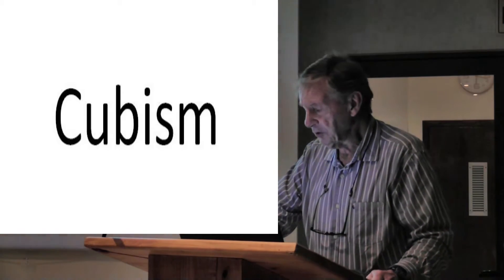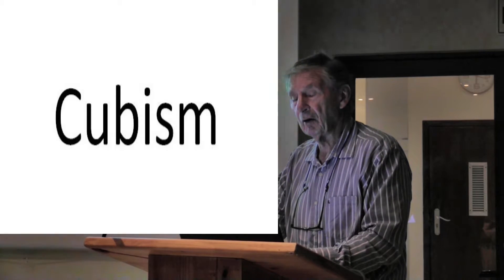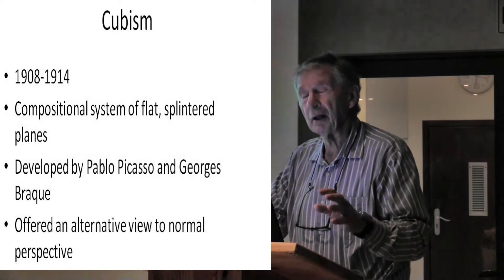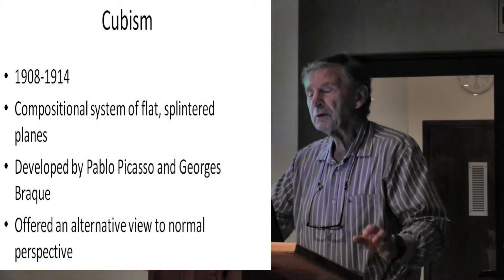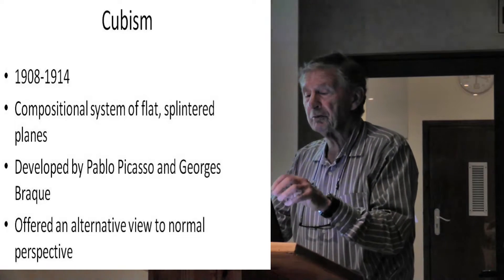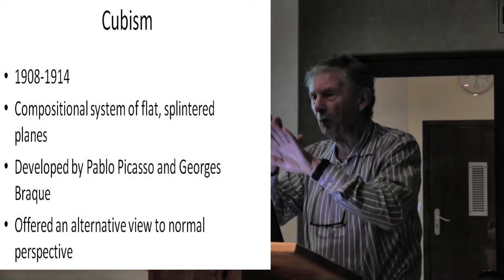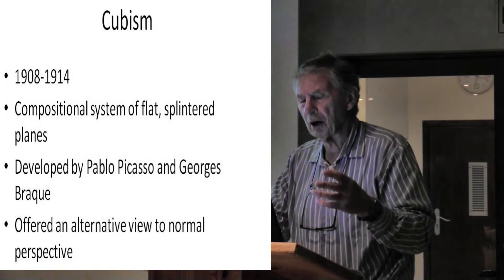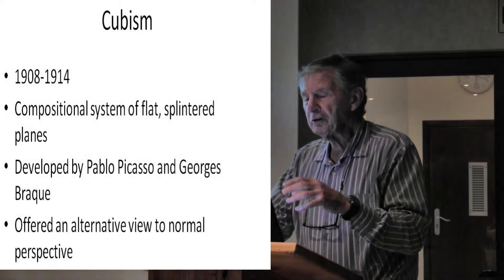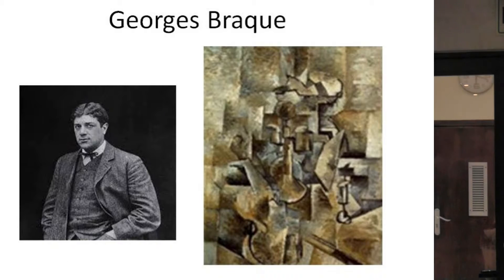Then along came the Cubists. Cubism was a very interesting style because they completely changed everything. They started off in 1908 and were at their peak in 1914, though Cubism went on for a long time. What was different about Cubism is that they had a compositional system of flat, splintered planes — no longer depth perception, all flat planes, splintered up. This was developed by Pablo Picasso and Georges Braque, offering an alternative view to the normal perspective. Here we can see Georges Braque's violin — you have to try and find a violin there.